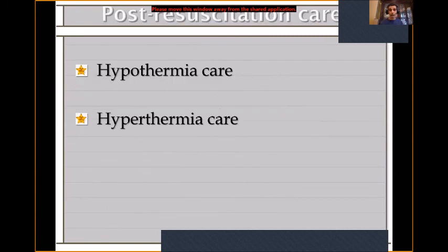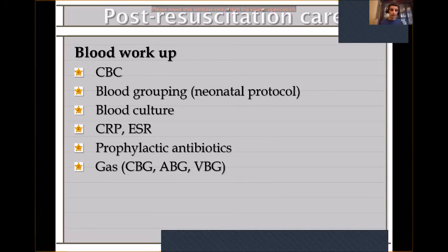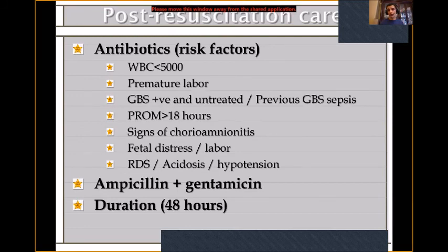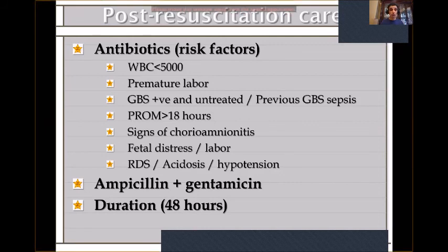Temperature control is vital — both hyperthermia and hypothermia effects are as severe as asphyxia. For blood work: CBC, blood grouping, culture, CRP, ESR. Regarding antibiotics: we give them if there are risk factors such as WBC less than 5,000, prematurity, GBS positive and untreated, previous GBS sepsis, ruptured membranes more than 18 hours, chorioamnionitis, fetal distress, RDS, acidosis, or hypotension. We start with ampicillin and gentamicin, with automatic discontinuation at 48 hours if blood culture is negative.